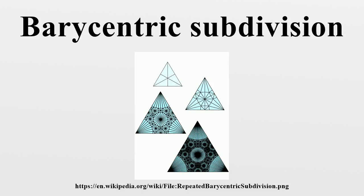Each triangle is associated to three elements: a corner of the pentagon, a side of the pentagon incident to that corner, and the pentagon itself. Similarly, the BCS of a cube consists of 48 tetrahedra, each associated to a sequence of nested elements — a vertex, an edge, a face, and the whole cube. Note that there are eight choices for the vertex, three for the edge, and two for the face.